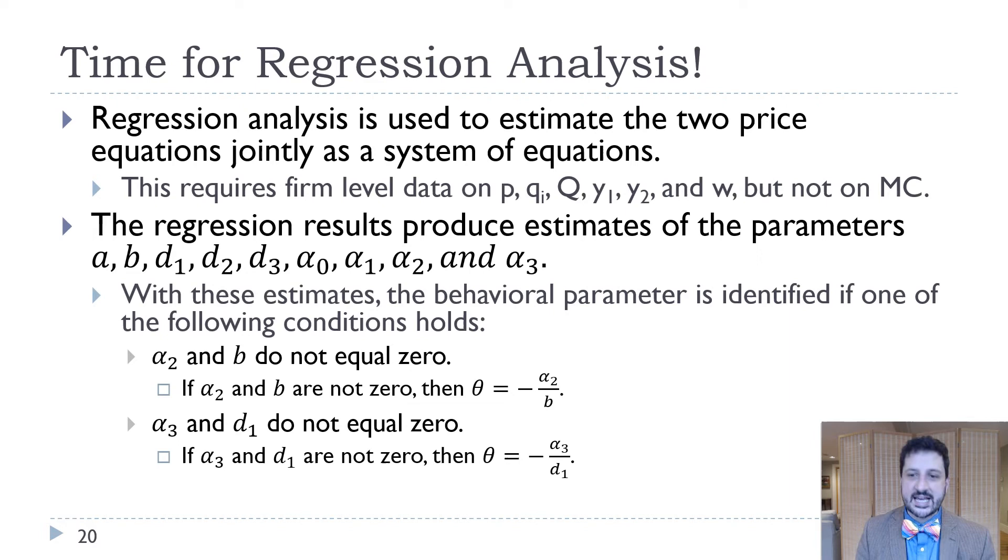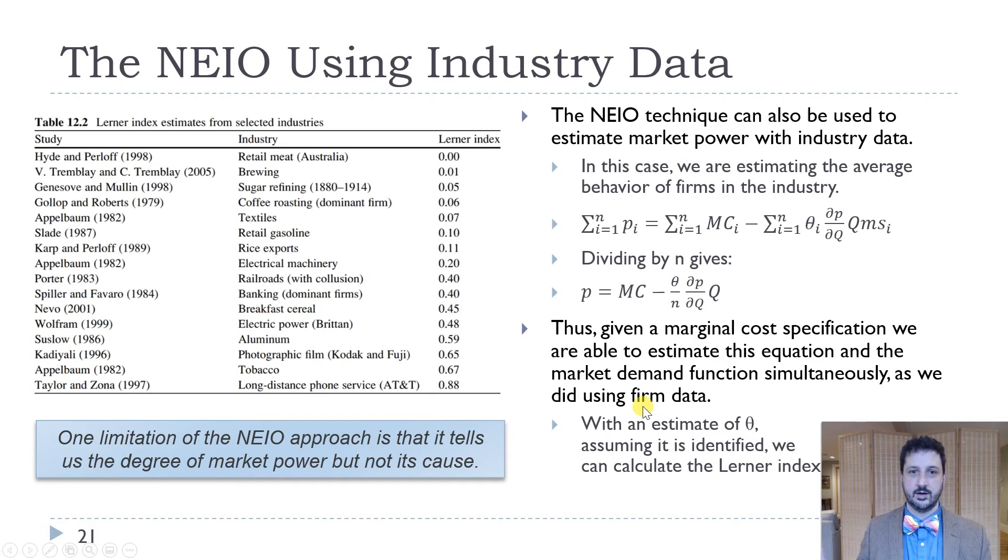That's going to give us estimates for all of these parameters: A, B, D1, D2, D3, alpha zero, alpha one, alpha two, and alpha three. And then we can use those estimates to calculate our theta. Theta is not observed directly, but we know that it's the ratio of two of these variables. So it's negative alpha two over B or negative alpha three over D1. As long as those aren't equal to zero, if they are equal to zero, then we don't have it. But as long as those aren't equal to zero, we can calculate theta and estimate some level of competition and then the Lerner index.